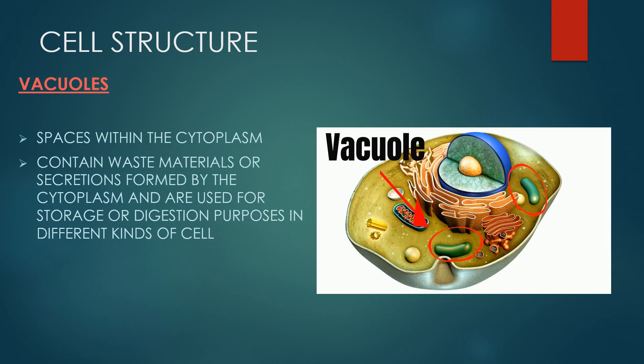A vacuole is a small structure found in animals, plants, bacteria and fungi cells. It's one of the largest organelles found in cells and it's shaped like a large sac. Vacuoles have a simple structure. They are surrounded by a thin membrane and filled with fluid and any molecules they take in. The main function of vacuoles is to hold various substances and molecules. They basically act like the storage unit of the cell. They contain waste materials or secretions formed by the cytoplasm and they are used for storage or digestion purposes in different kinds of cells.